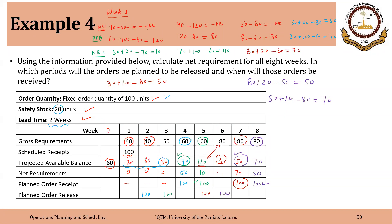This is the MRP matrix for the case when we have a safety stock to maintain. The basic output again is the last row — the planned order release. We do need to have a planned order release of 100 in each of week two, three, five, and six. If you are purchasing this item, these should be the purchase orders to release.